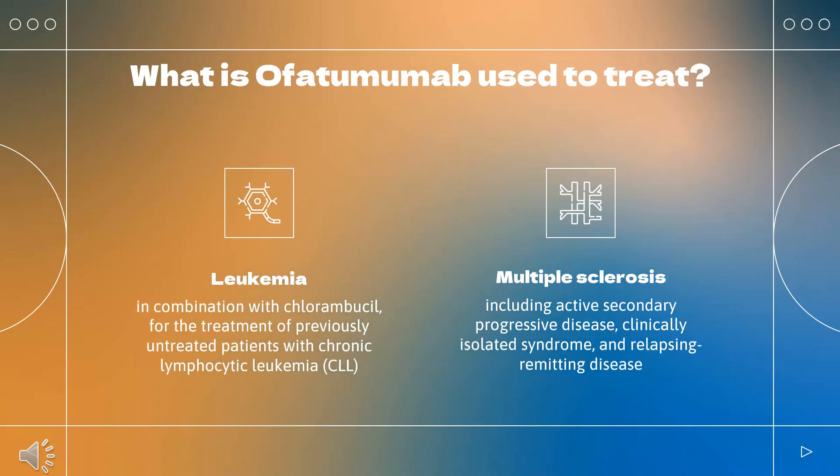Ofatumumab is indicated, in combination with chlorambucil, for the treatment of previously untreated patients with chronic lymphocytic leukemia (CLL) for whom fludarabine-based therapy is considered inappropriate. In patients with recurrent or progressive CLL, ofatumumab is indicated for extended treatment of patients who are in complete or partial response after at least two lines of therapy for recurrent or progressive CLL. Ofatumumab is also indicated for the treatment of patients with CLL refractory to fludarabine and alemtuzumab.